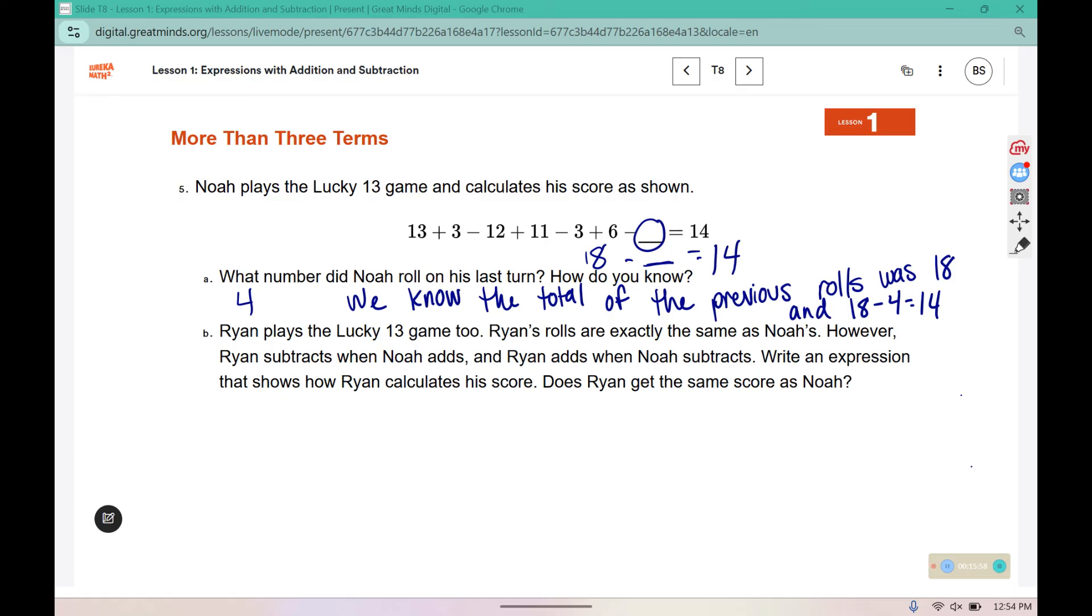Ryan plays the Lucky 13 game too. Ryan's rolls are exactly the same as Noah's. However, Ryan subtracts when Noah adds and he adds when Noah subtracts. Write an expression that shows how Ryan calculates his score. Does Ryan get the same score as Noah? So we're changing. If it was an addition, it's now a subtraction. If it was subtraction, he did the opposite and added.